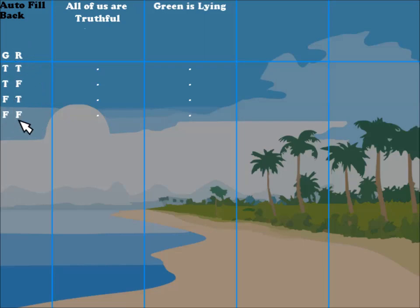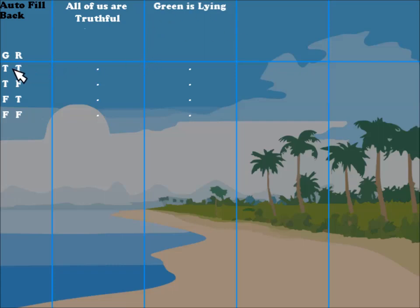What the truth table shows are all the possible outcomes: they both could be telling the truth, Green could be telling the truth and Red lying, Green could be lying and Red telling the truth, or they're both lying. We take each assumption and check how their statements add up. If we assume they're both telling the truth, Green's statement — all of us are truthful — is true, but Red's statement — Green is lying — is false. So Red can't be telling the truth and lying at the same time; that's not an answer.